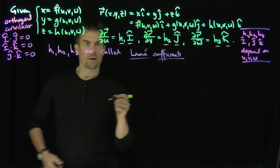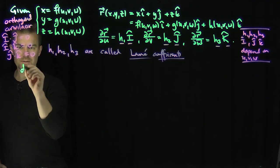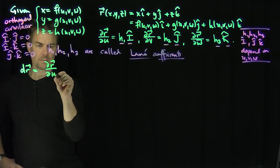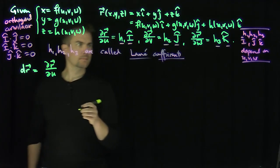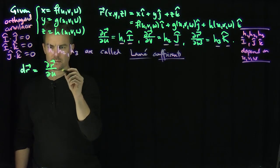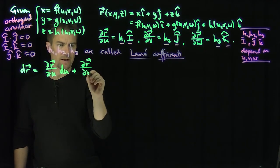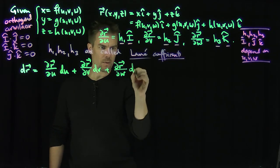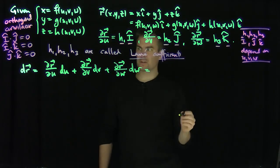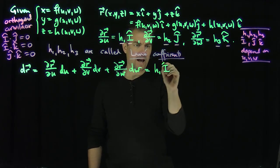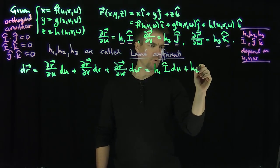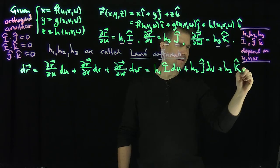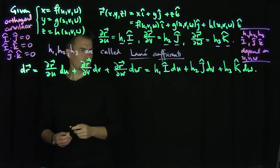What I'd like to do now is look at dr. So dr, this vector differential, is going to be (∂r/∂u) du + (∂r/∂v) dv + (∂r/∂w) dw — just the first-order differential. We can fill in: this is h₁ î du + h₂ ĵ dv + h₃ k̂ dw. So that's the differential of these orthogonal curvilinear coordinates.